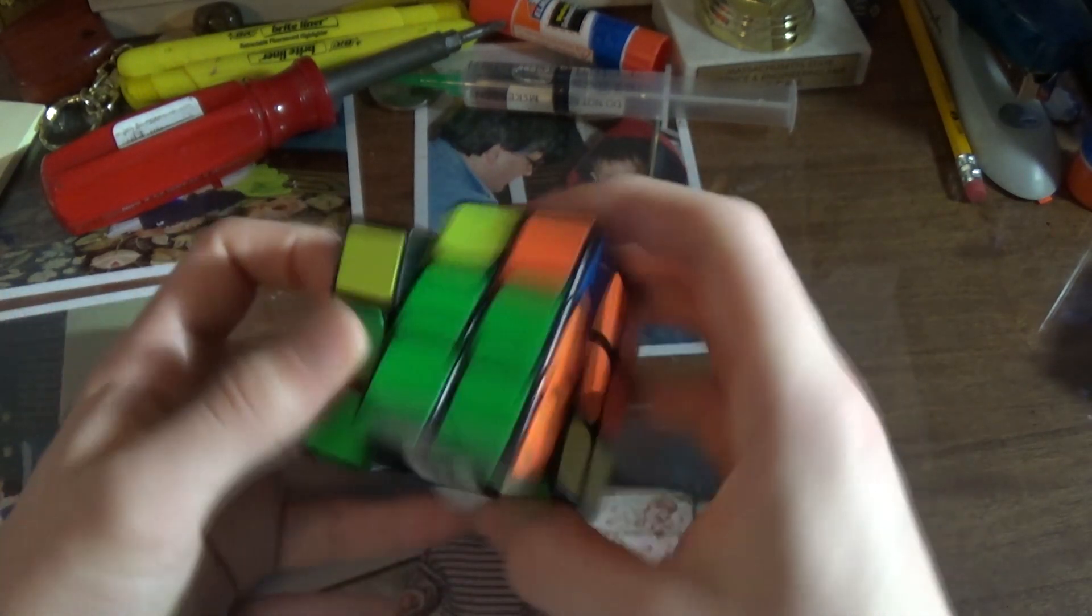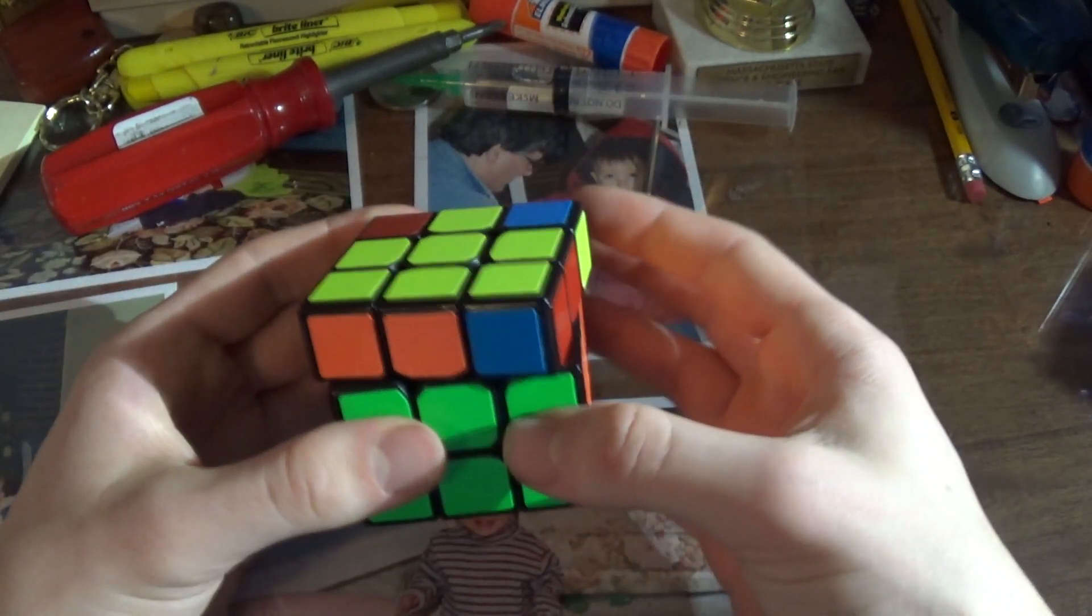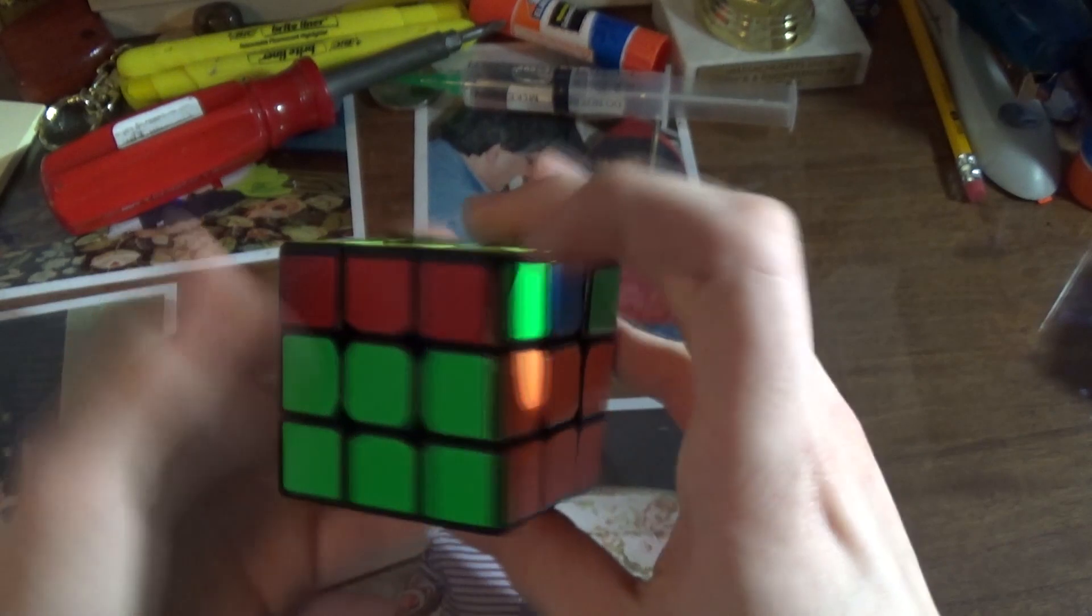It's when, if you hold it this way, you do the normal ALG, you get a V-perm. If you do it from this way, you get a U-perm.